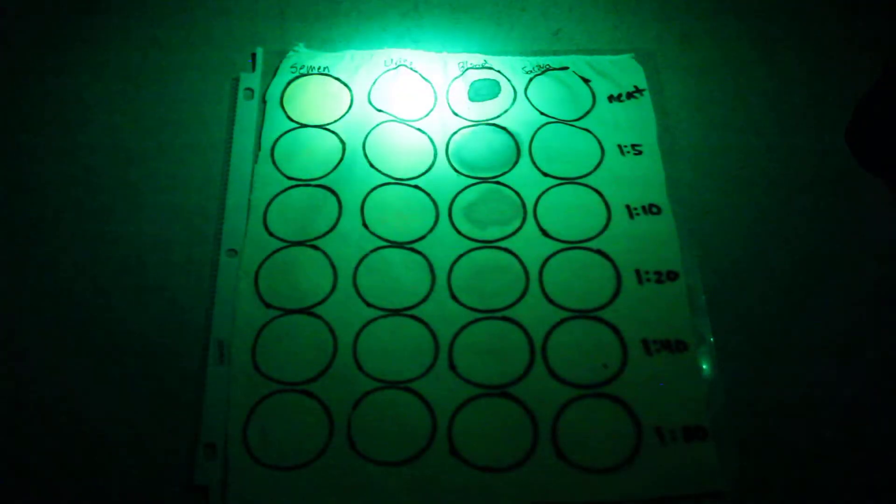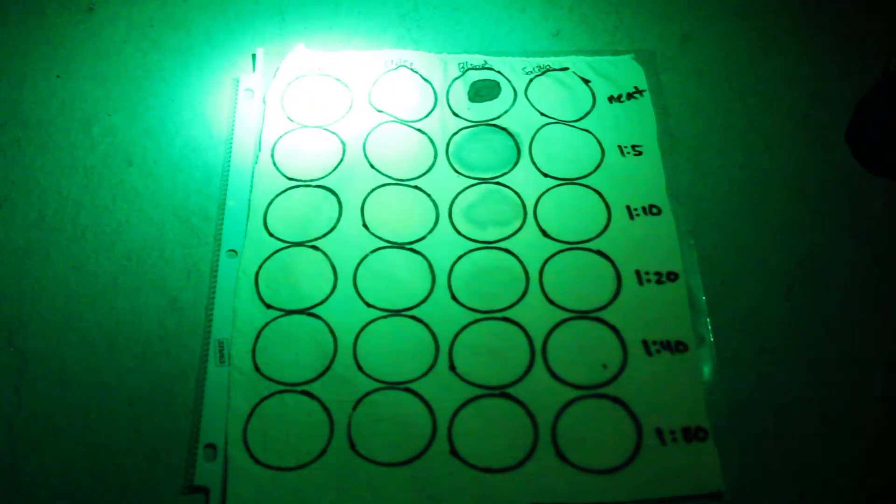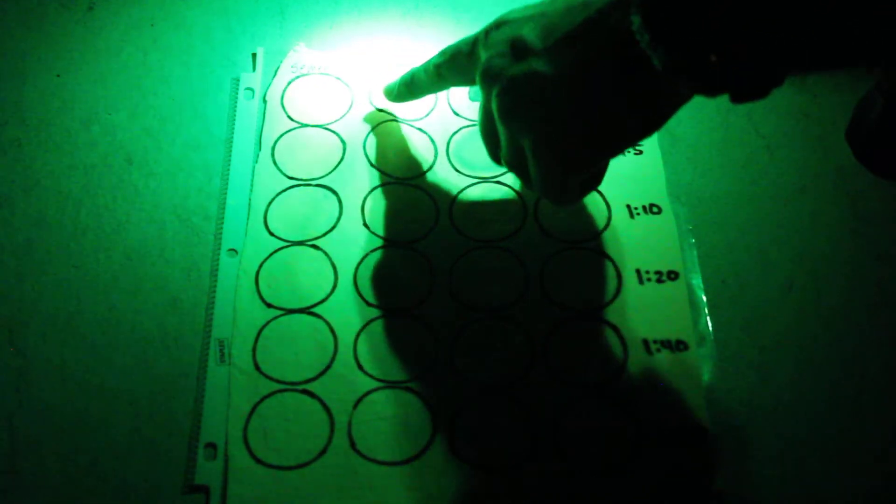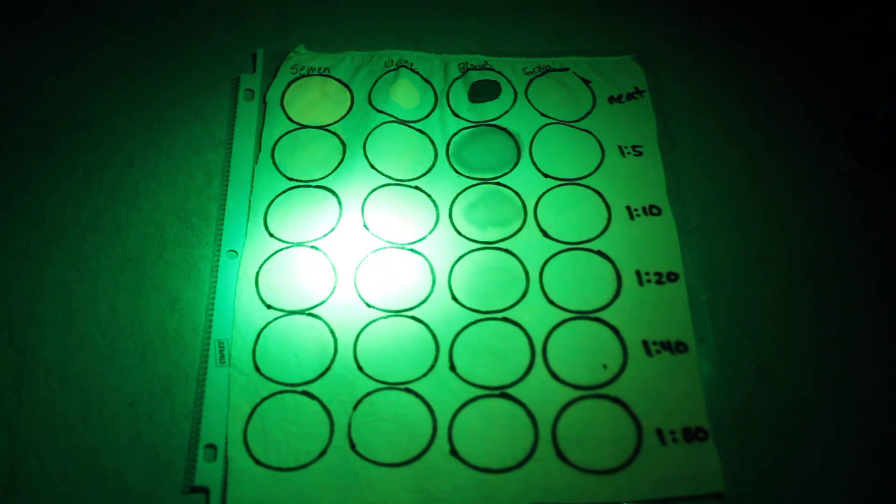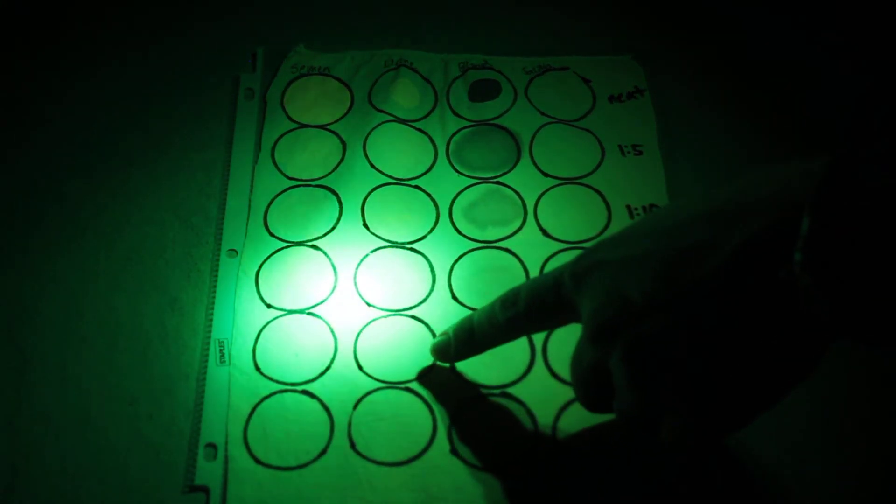And just before we go, I want to compare the Hammerhead, which is a brighter light. Here we go on full power. Again, semen and urine. As we go down, you'll see that the evidence gets more dilute, but we can still see. I can still see it down here, but it gets kind of faint here.